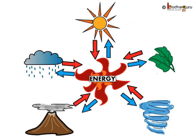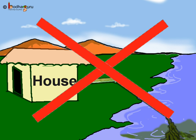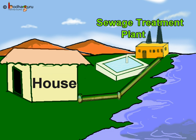Nations across the world are trying to increase the usage of wind and solar energy instead of fossil fuels like oil and gas, as wind and solar energy do not cause any form of pollution. These are also available in huge quantities, whereas the quantity of fossil fuels is limited. Sewage drains should not open directly into water bodies like lakes and rivers, as they pollute the water. Sewage treatment plants are installed to remove poisonous substances from the sewage before the water is released into rivers or seas.